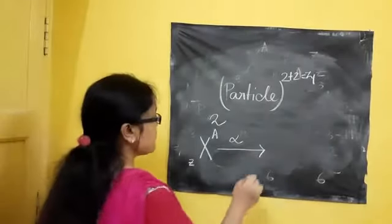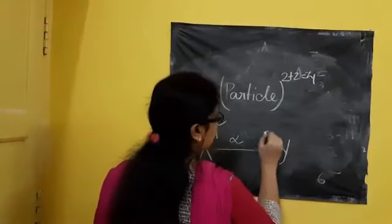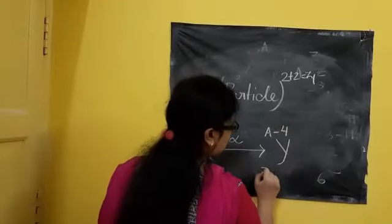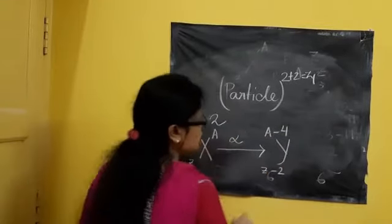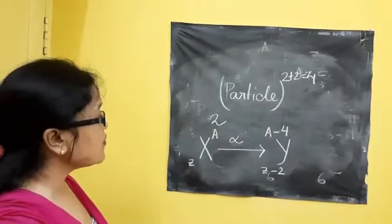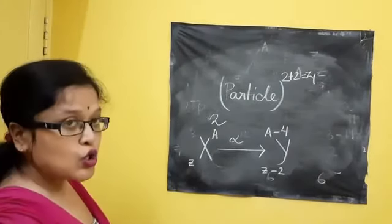So if alpha particle emits, a new nucleus, suppose this is Y, whose mass number will be decreased by 4 and atomic number will be decreased by 2.